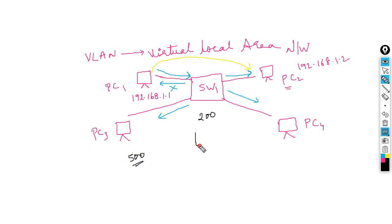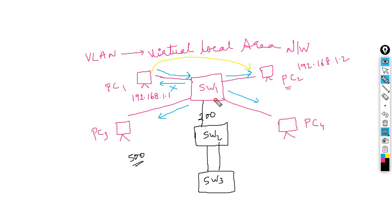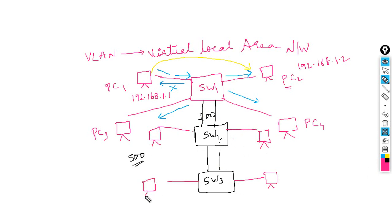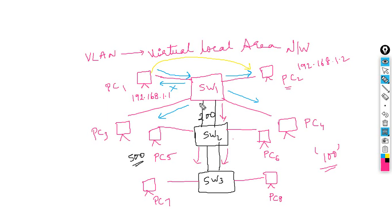Imagine you have 200 switches connected together, each with 20 or more PCs. If one PC sends a broadcast, it propagates across all switches and reaches every device. With 100 or more PCs, the broadcast traffic becomes massive and harmful to network performance.